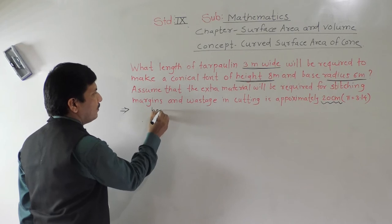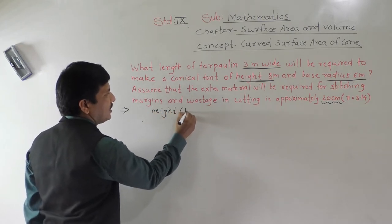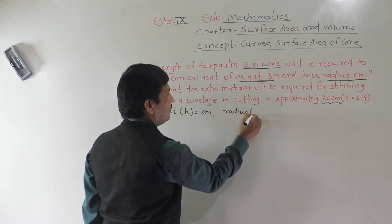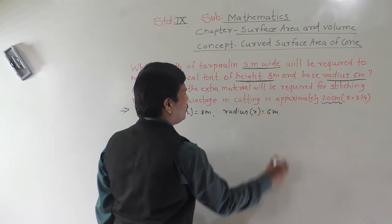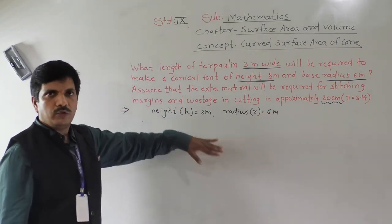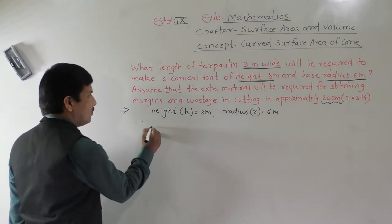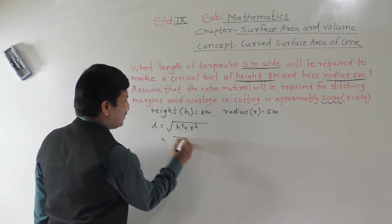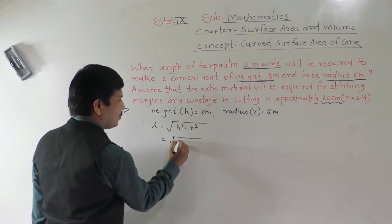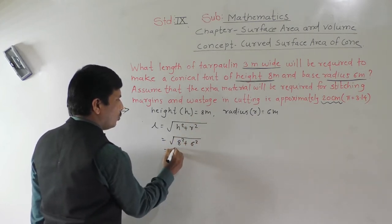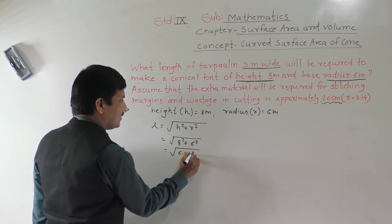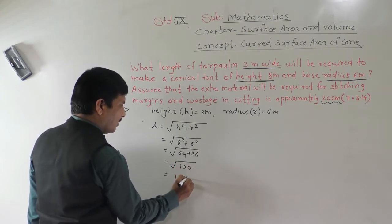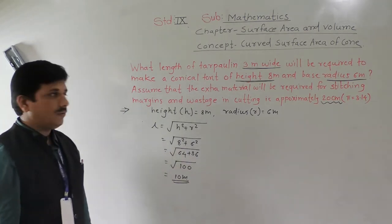With height and radius given, we can find out slant height easily. Height h is equal to 8 meters, and radius r is equal to 6 meters. Slant height is equal to the square root of (h² + r²). So that is square root of (8² + 6²) = square root of (64 + 36) = square root of 100 = 10 meters. So slant height is now 10 meters.